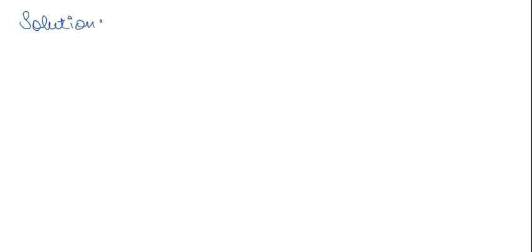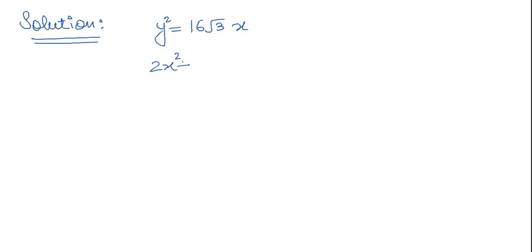We need to check both statements, so let's work this out on the whiteboard. First, let us write the equations: the parabola is y² = 16√3·x and the ellipse is 2x² + y² = 4. The ellipse can be written in standard form as x²/2 + y²/4 = 1.